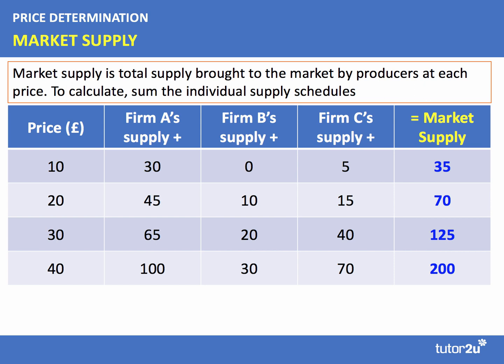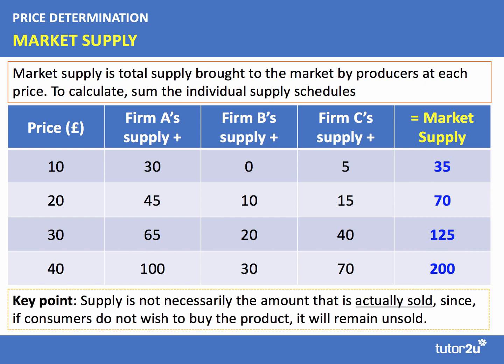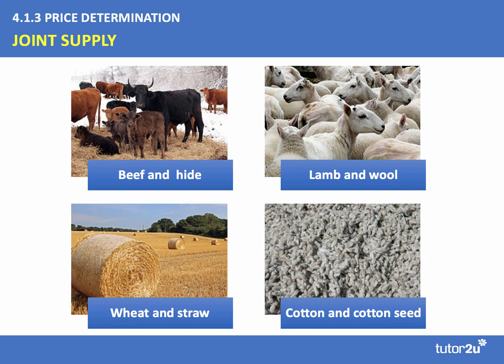A key revision point is that supply is not necessarily the quantity that is actually sold. If consumers don't want to buy the product, or don't have the willingness or ability to pay for it, the product will often remain unsold. Supply is essentially what producers are willing and able to bring to the market at a given price. Clearly, demand has a consequence for the quantities bought and sold.